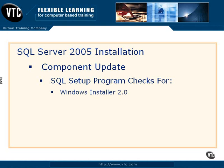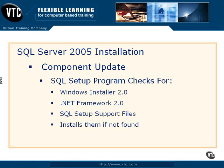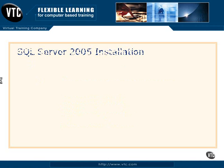One of the things it checks is Windows Installer 2.0, the .NET Framework 2.0, and various setup support files. Now, some of these, if not found, it will install them. There are things it can install, and it's going to stop the installation and let you know about that and tell you what you need to do and recommend something.